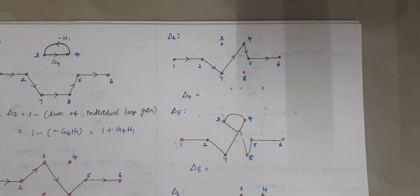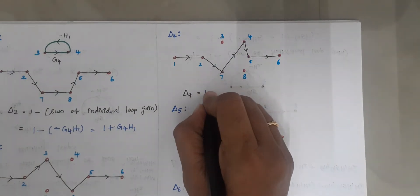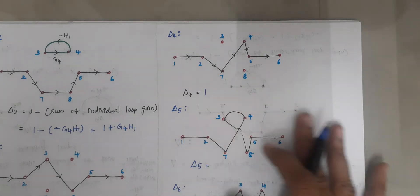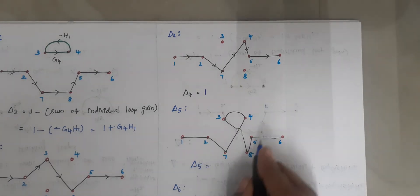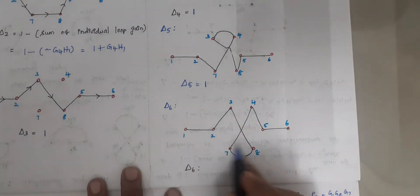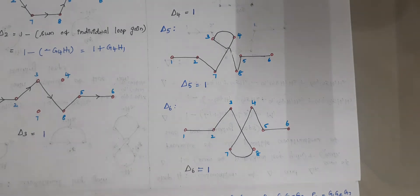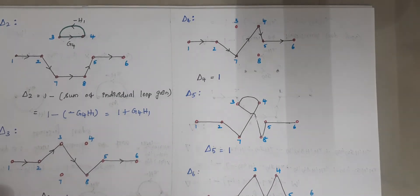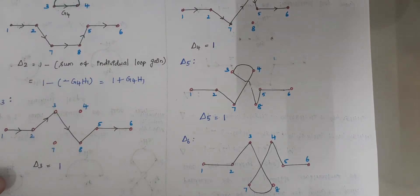Similarly, for Δ4 there are no loops that do not touch the fourth forward path, so Δ4 = 1. For Δ5, this path covers all 8 nodes (1, 2, 3, 4, 5, 6, 7, 8), so no loops are possible and Δ5 = 1. Likewise, Δ6 covers all nodes and Δ6 = 1. In an exam, there is no need to draw all these paths separately — you can observe the forward path and directly write the respective delta values.